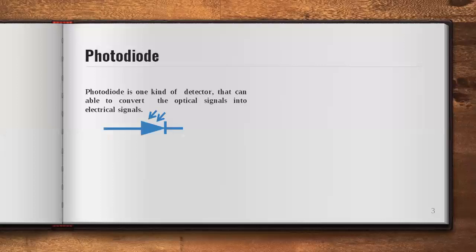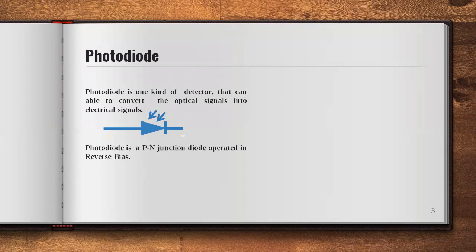The photodiode is a kind of detector. It can convert optical signals into electrical signals. This is the symbolic representation of the photodiode. The arrows represent light coming towards the diode, meaning that light is absorbed by the diode. Photodiode is a semiconductor device and it is operated in reverse bias condition. The complete details about the PN junction photodiode, its construction and working principle, are discussed in the previous video.